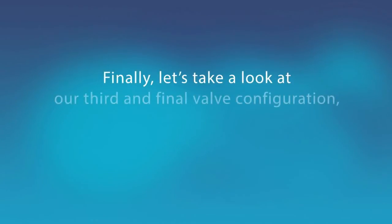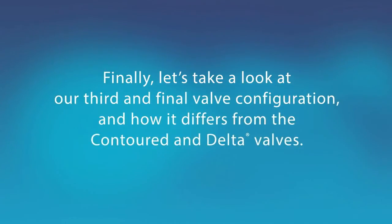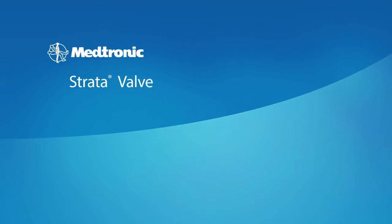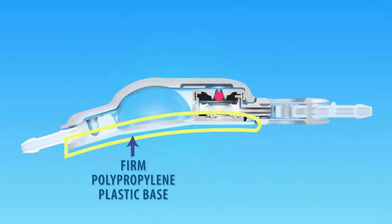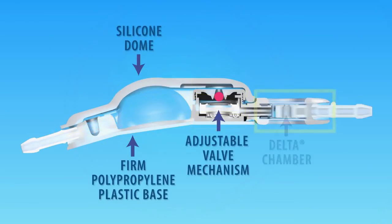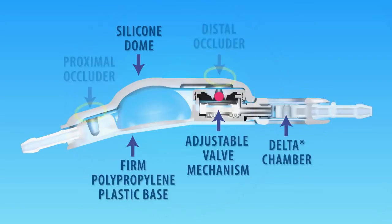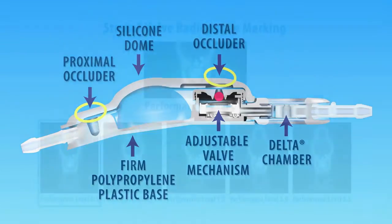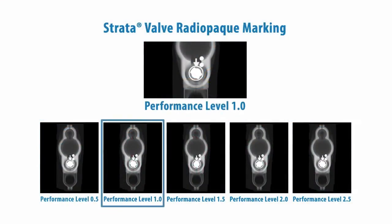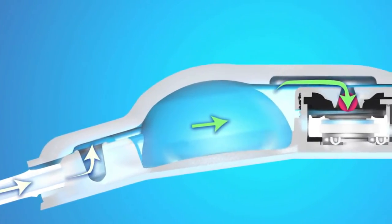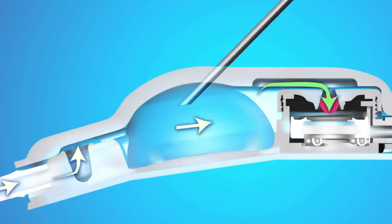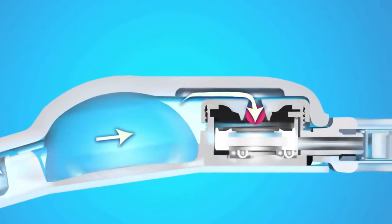Finally, let's take a look at our third and final valve configuration and how it differs from the contoured and Delta valves. The Medtronic StratoValve consists of a firm plastic base, a silicone dome, an adjustable valve mechanism, and a Delta Chamber for siphon control. The StratoValve also has proximal and distal occluders for selective flushing. Additionally, the StratoValve has radiopaque markings to indicate flow direction and orientation of the valve in the X-ray image. As CSF flows through the StratoValve, it enters the inlet connector, flows by the proximal occluder, and into the central reservoir. For sampling CSF, the reservoir dome can be accessed using a 25-gauge or smaller non-coring needle. From the reservoir, the CSF flows into the cone opening of the adjustable valve mechanism.